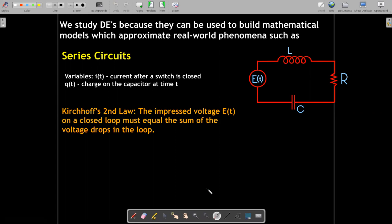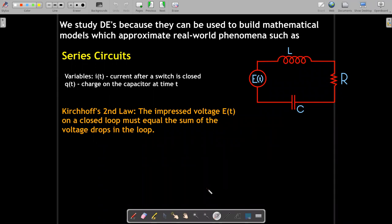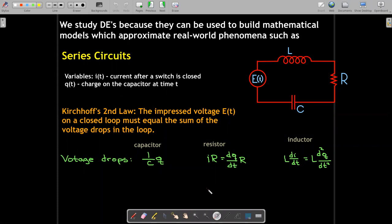We're going to make use of Kirchhoff's second law, which says that the impressed voltage measured there at E of t on a closed loop must equal the sum of the voltage drops in the loop. So what are the voltage drops? Well, it depends on the components. If you have a capacitor, the voltage drop is 1 over C times Q. Q, remember, is the charge. For a resistor, it's I times R, but I is also dq by dt. So it could be dq dt times R. And then for the inductor, the voltage drop is L times di dt, which would be L times the second derivative of the charge with respect to time. So if we put all that together with Kirchhoff's law, we get this second order differential equation.